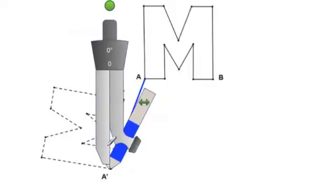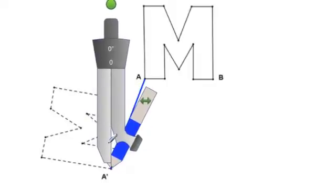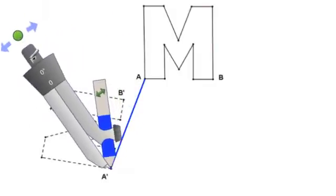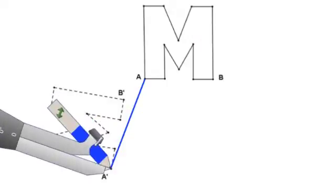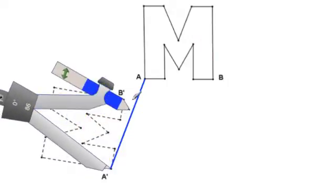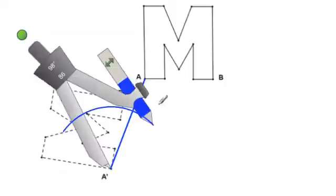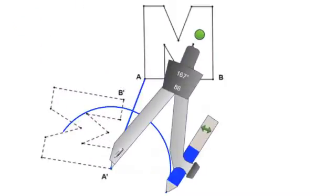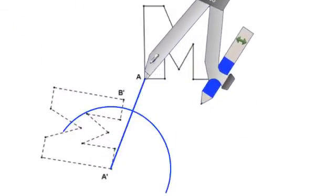Take the compass and put it on one endpoint and stretch it more than halfway and swing an arc on each side of the line segment. You should see both intersections above and below the line.